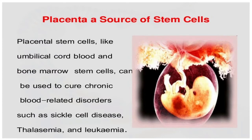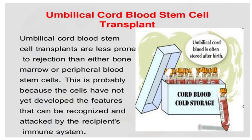The placenta is a major source for stem cells. Umbilical cord blood stem cell transplants are less prone to rejection than either bone marrow or peripheral blood stem cells. This is probably because the cells have not yet developed the features that can be recognized and attacked by the recipient's immune system. So umbilical cord stem cells are preferred due to reduced chances of rejection.